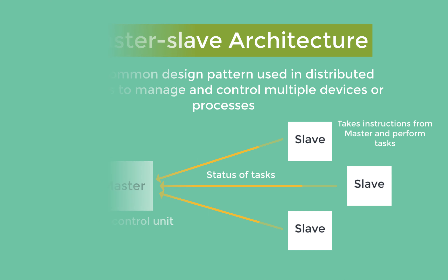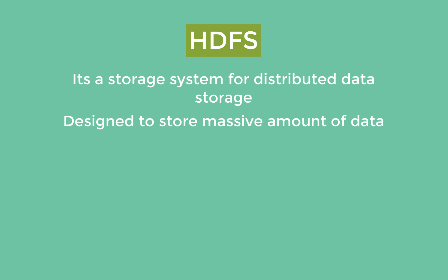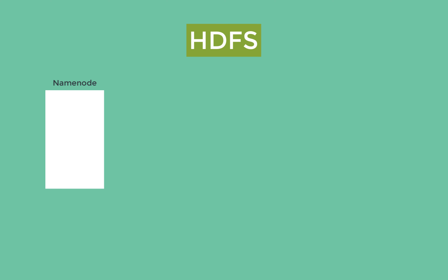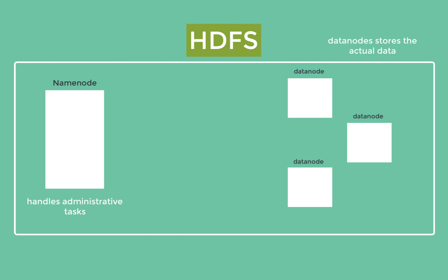HDFS is a storage system for distributed data storage, designed to store massive amounts of data across multiple nodes in a distributed manner. In the context of HDFS, the master-slave architecture plays a crucial role. The HDFS architecture comprises two main components: the NameNode, which is the master, and DataNodes, which are the slaves. The master node handles various administrative tasks while the slave nodes are responsible for data storage.